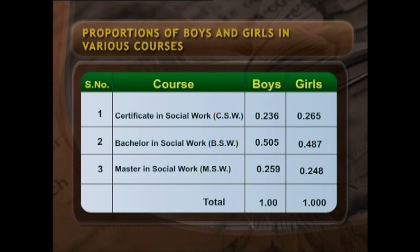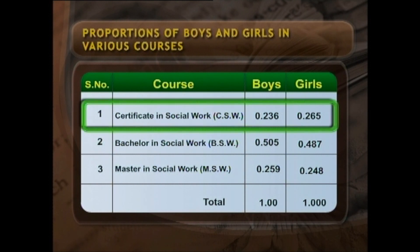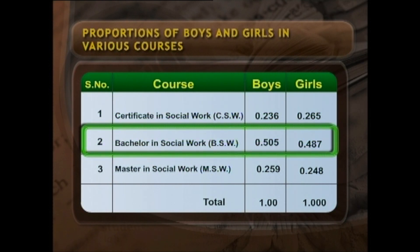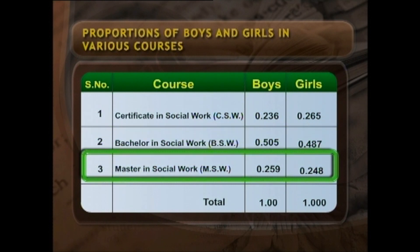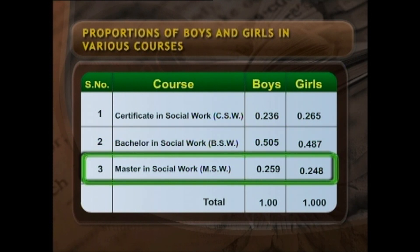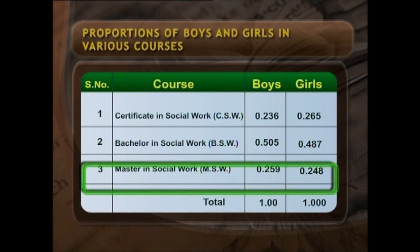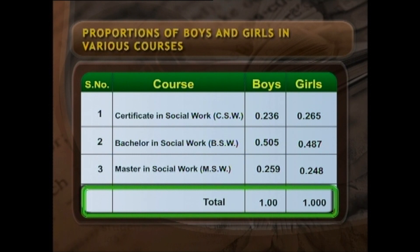Other proportions can be computed in a similar fashion and results summarized in tabular form. In the table we can see that for CSW, boys' proportion is 0.236 and girls' proportion is 0.265; in BSW the boys' proportion is 0.505 and girls' proportion is 0.487; in MSW boys' proportion is 0.259 and girls' proportion is 0.248. The total proportion for all boys is 1. The value of a proportion cannot be greater than 1; if we add the proportions of cases in all categories the result is 1 — this is an important property of proportions.